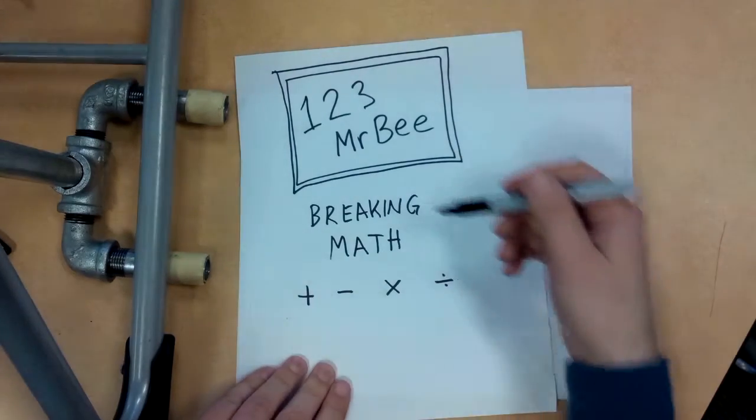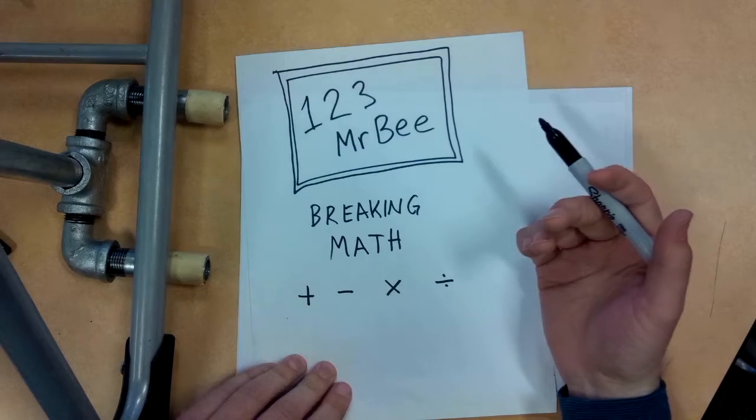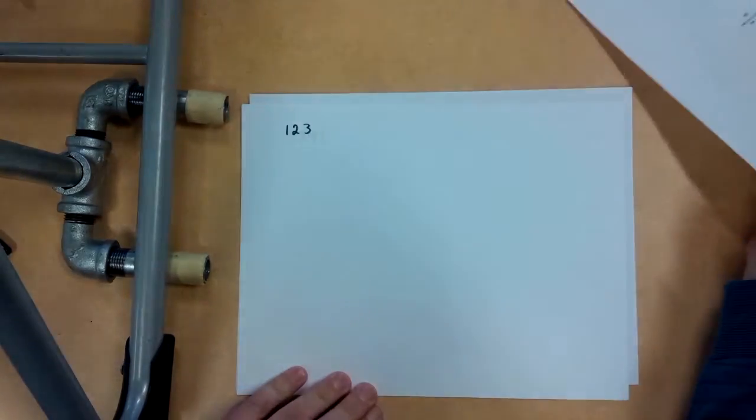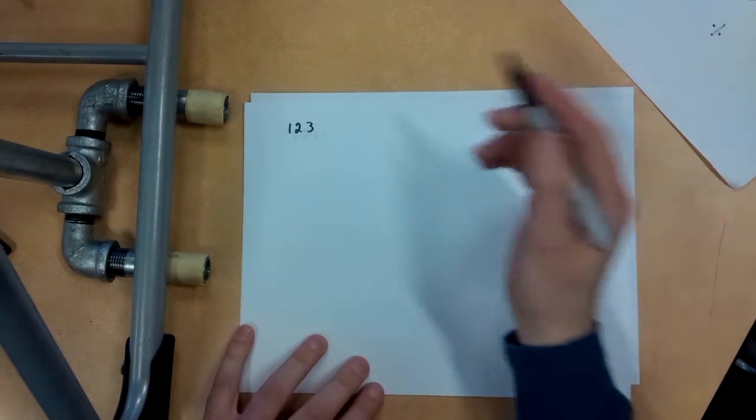Hey everybody, it's 123MrB. We're on our Breaking Math series, learning about math fluency and how to get faster and building our numeracy skills. This is going to be a practice exercise on doubling.